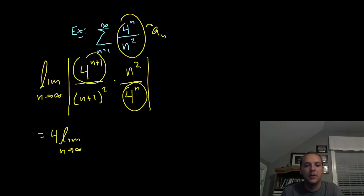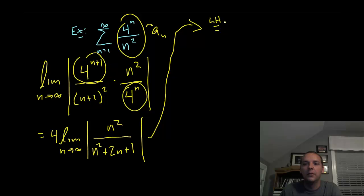Limit n approaches infinity. Absolute value n squared over, I'm going to go ahead and foil this. Just looking a step ahead. Anticipate what's going to happen here. n squared plus 2n plus 1. Alright, here you get infinity over infinity if you try to evaluate that limit. So this would be a good time to use L'Hopital's rule. If you're unfamiliar with L'Hopital's rule, it's a rule that helps you evaluate limits that give you an indeterminate form. It's a great time to use that.